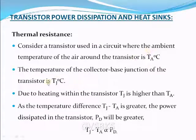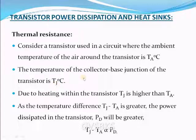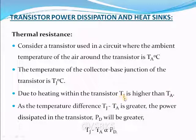As electrons flow into the collector region, heat is generated at the junction. We know that heat transfers from a hot body to a cold body, so heat will dissipate from the junction only if the junction temperature Tj is greater than the ambient temperature Ta — then only the heat will get out. Due to heating within the transistor, Tj is definitely higher than the surrounding temperature, so the junction temperature can be dissipated into the surroundings.